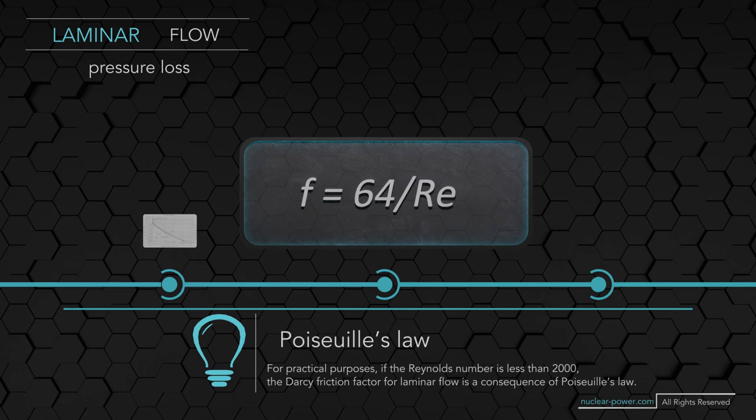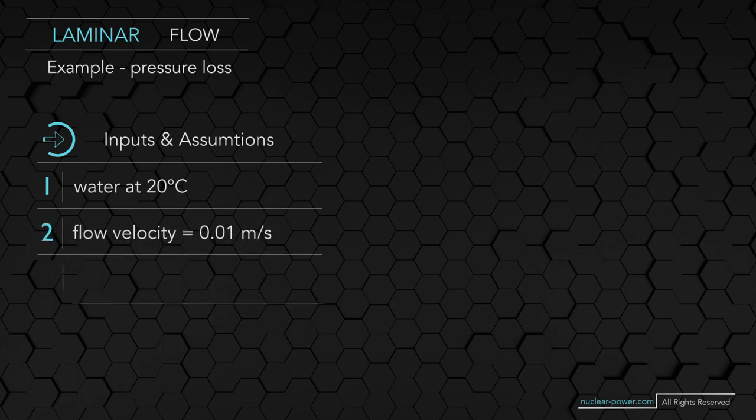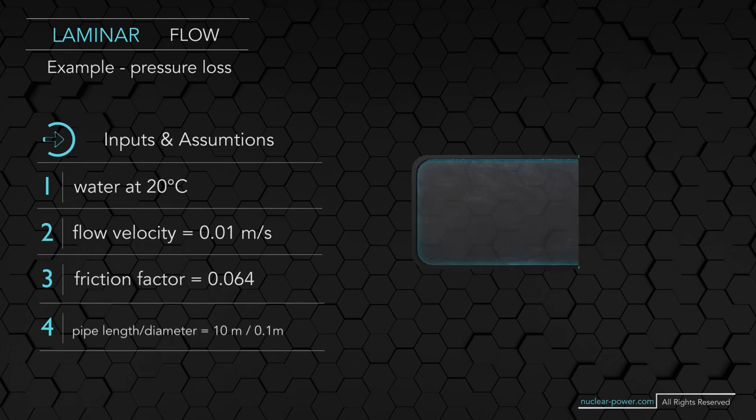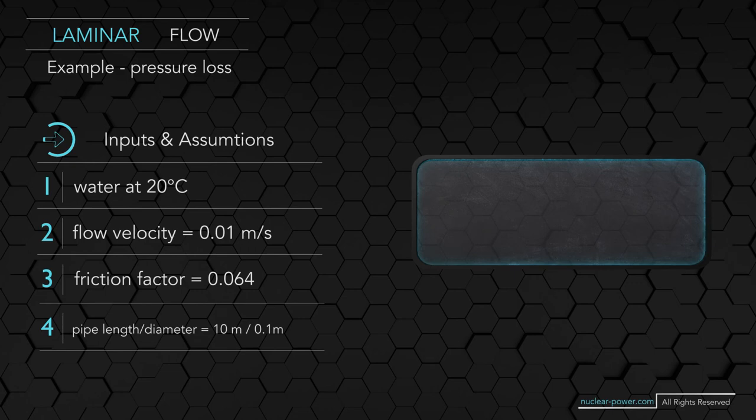For example, let's calculate friction losses that occur in pipe flow due to the effect of the fluid's viscosity near the surface of the pipe. We will assume similar calculation inputs as in the previous example, but we will assume the flow velocity to be 0.01 meters per second. The resulting Reynolds number for water flow in a circular pipe with a diameter of 10 centimeters, where the dynamic viscosity for water at 20 degrees Celsius is 0.001 pascal seconds, is 1000. Using the Moody diagram, we determine the friction factor to be 0.064. Using the Darcy-Weisbach equation, we determine the resulting pressure loss to be 0.32 pascals for a 10-meter-long pipe.